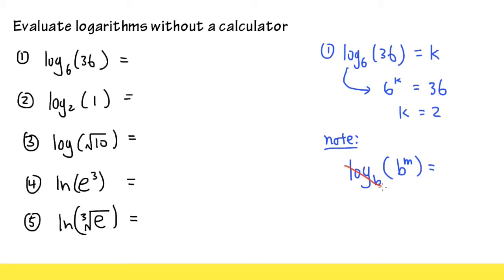We get to cancel the log and then the b right here. Because b to the m is the exponential form, right? And log of something like this, log and exponential, they cancel each other out. And we will just leave with the m for the answer. So this is the idea I'm going to use for these questions.